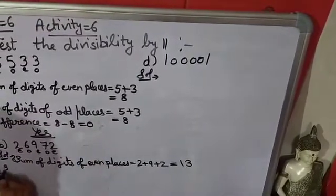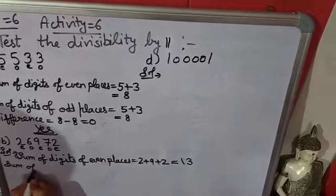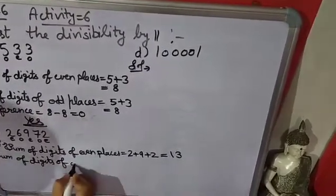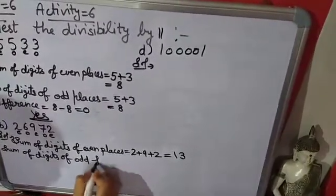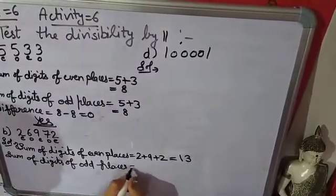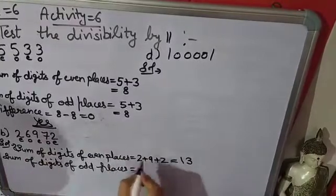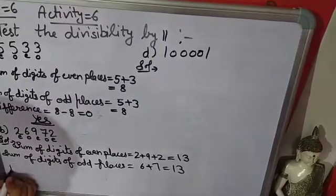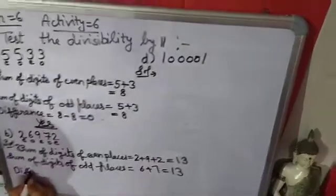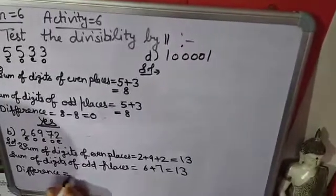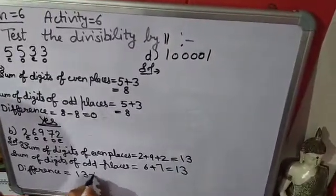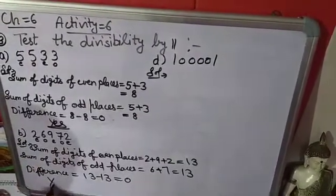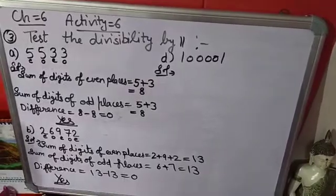Now the sum of digits at odd places: those digits are 6 and 7, which also gives 13. Finding the difference: 13 minus 13 equals 0, so this number is completely divisible by 11 as well.